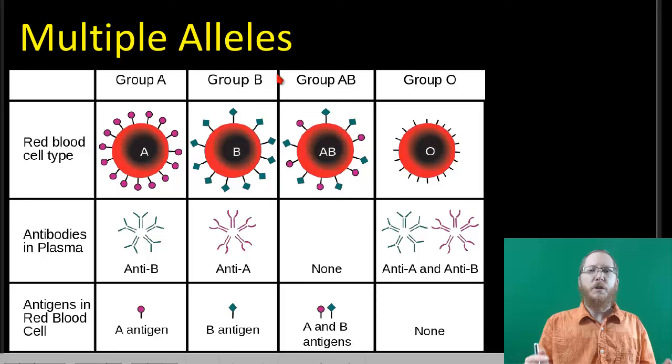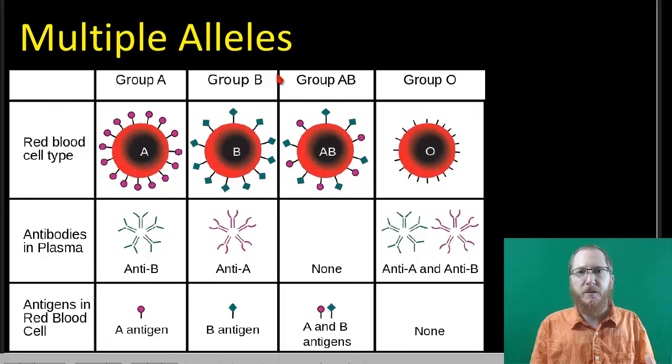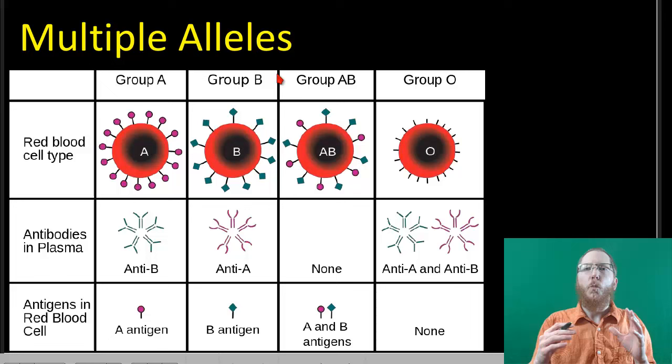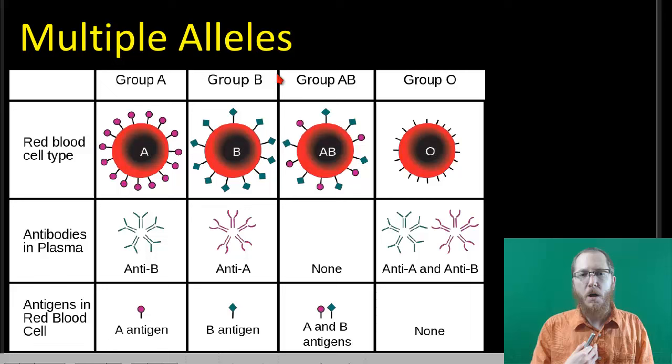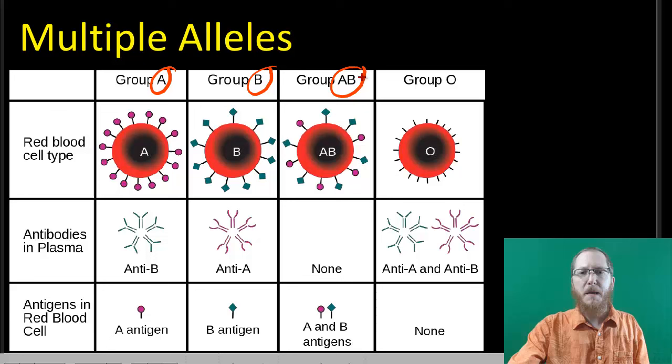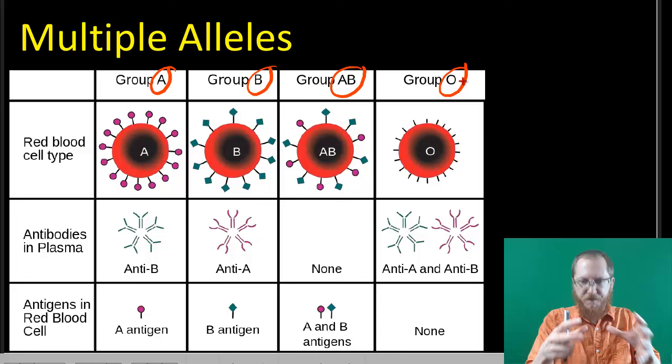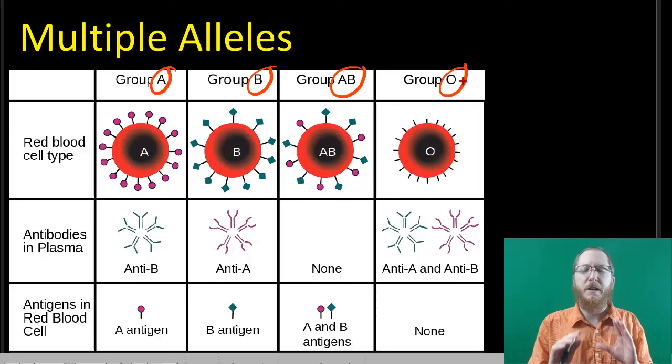Switching gears — we also have situations with multiple alleles, where there's not just two options. It's not just tall and short or purple and white; we have a variety of options. One commonly used example is blood type. In humans, we can have blood type A, B, AB, or O. With this specific gene, there are ultimately four possible phenotypes you can get.